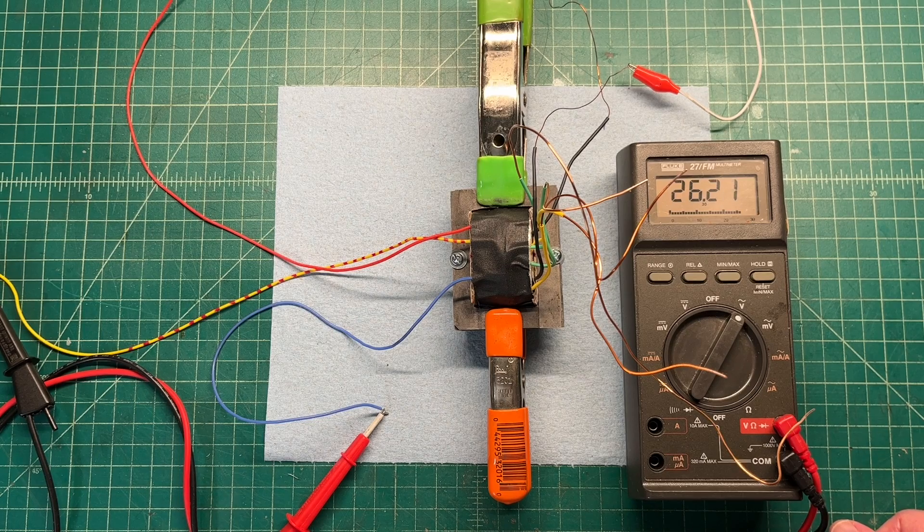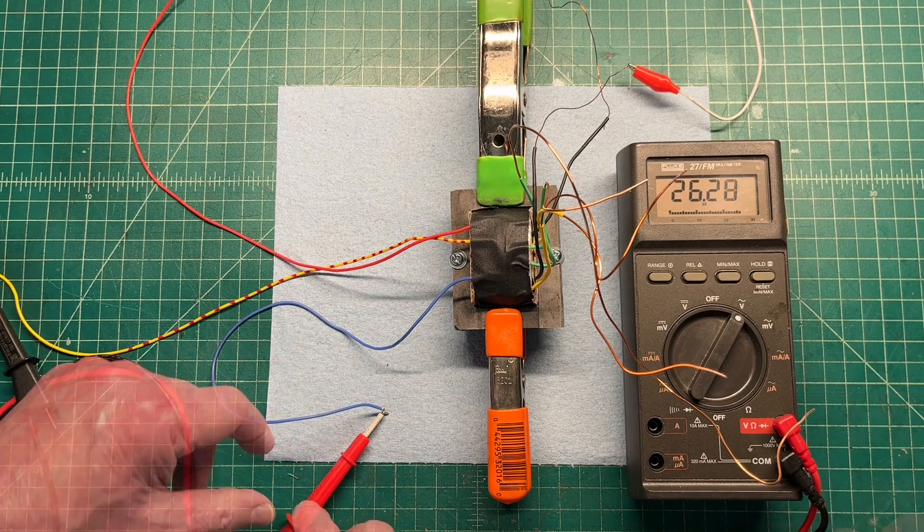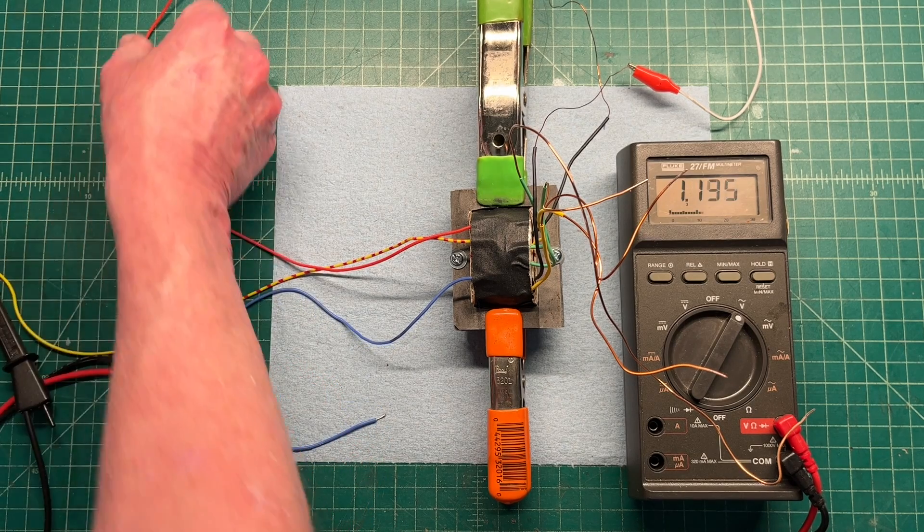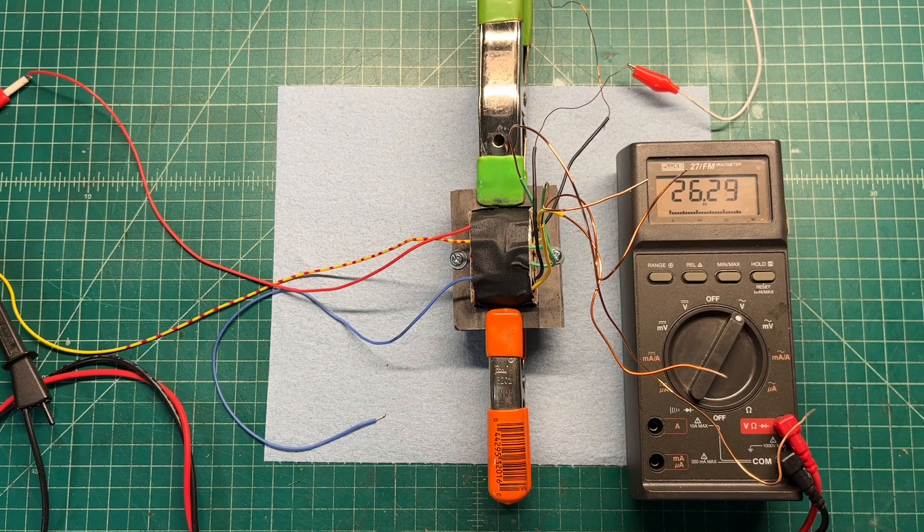And you can see we're at 26.2. We'll note that. Run the numbers through the calculator in just a moment. Let's go over to the other side of the center tab. And almost the same, 26.29.